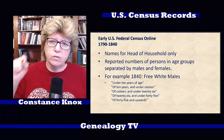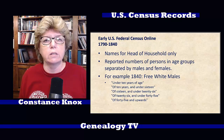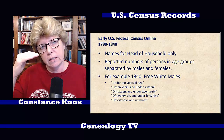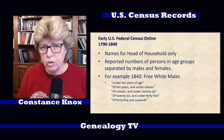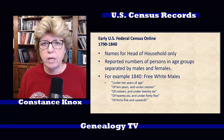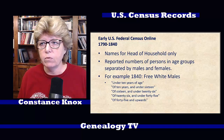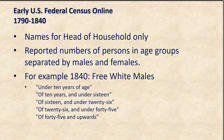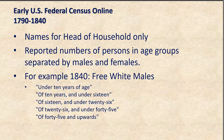For 1790 through 1840, the census only listed the names of the head of household and then listed how many people were in the household in various age groups, which also changed slightly through the years. For example, the 1840 census shows free white males with each column having different age groups: under 10 years of age, 10 and under 16, 16 and under 26, 26 and under 45, 45 and upward.